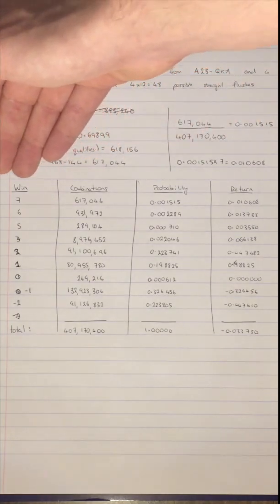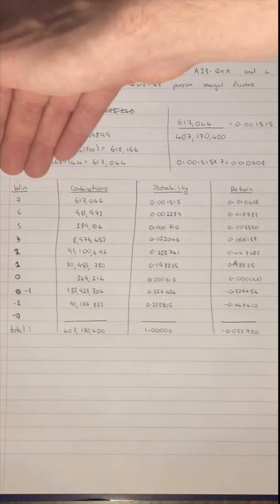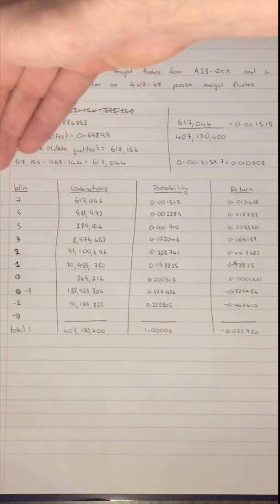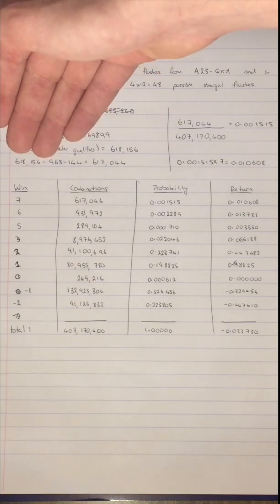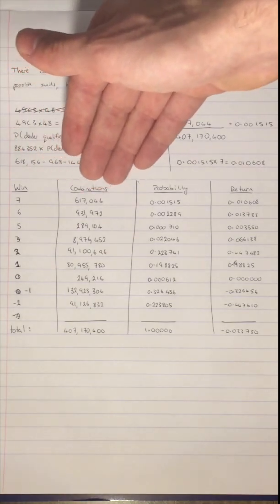If a player is to win 7, then the player must have achieved a straight flush and the dealer must have qualified. There are 617,044 combinations.